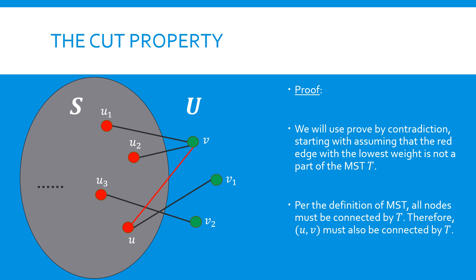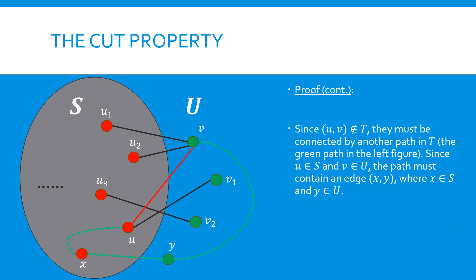We will prove the cut property using proof by contradiction. We will assume that the minimum edge is not included in the MST, and show that this leads to a contradiction. Suppose the MST T does not contain the minimum edge UV. Since T is the MST that connects all nodes in the graph, the nodes U and V must also be connected through T. Since the edge UV is not part of T, U and V must be connected by another path, for example, the green path.